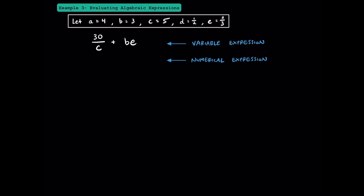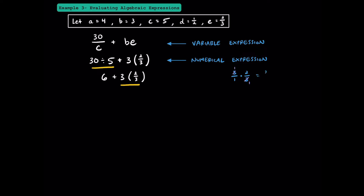Let's try another: 30 over C plus BE. Since 30 over C means 30 divided by C, we substitute 5 in for C to get 30 divided by 5, then add the product of B and E — B is 3 and E is two thirds. Division comes before addition, so 30 divided by 5 is 6. Now we have 6 plus 3 times two thirds. Multiplication comes before addition: to multiply 3 times two thirds, write 3 as 3 over 1, cross-cancel the 3s, and get 2 over 1, or 2. So we have 6 plus 2, which equals 8.